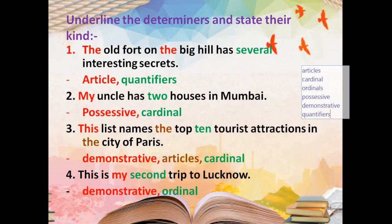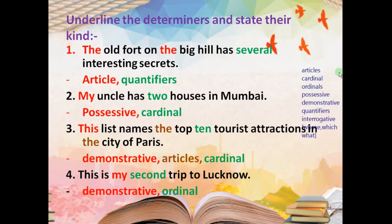Now let's review all types. Articles: 'a' and 'the.' Cardinals: one, two, three, four — these are cardinals. Ordinals: first, second, third, fourth — these indicate positions. Possessive — ownership: my, your, his. Demonstrative: four words — this, that, these, those. Quantifiers: some, any, few, little, much, more. Interrogative: whose, which, what — used with question marks.